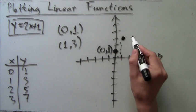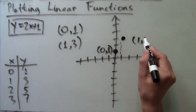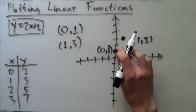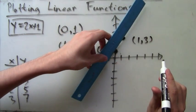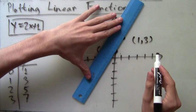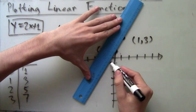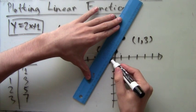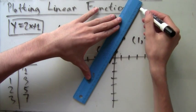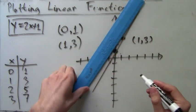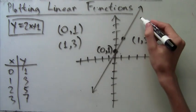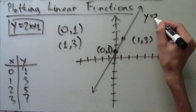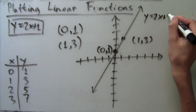Now that we have two points, all it takes is a ruler to connect them into a straight line, and this will be the plot of our equation. Don't forget to put arrows on both ends and then label this line with its function y=2x+1.